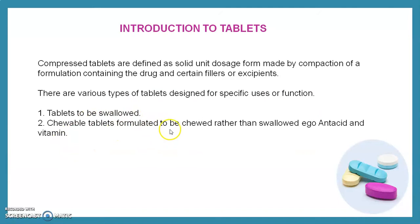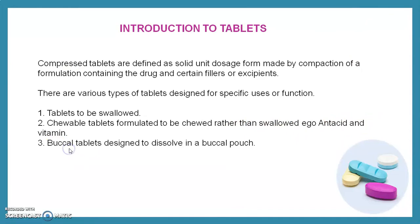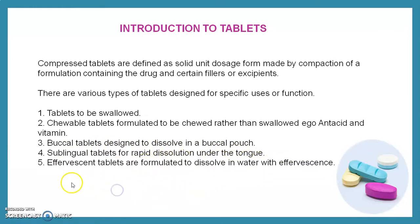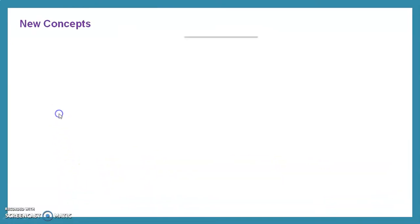Types of tablets: chewable tablets are formulated to be chewed rather than swallowed — examples include antacid and vitamin tablets, which is our today's example. Buccal tablets are designed to dissolve in the buccal pouch. Sublingual tablets are for rapid dissolution under the tongue. Effervescent tablets are formulated to dissolve in water with effervescence.